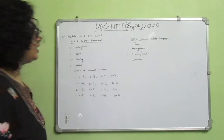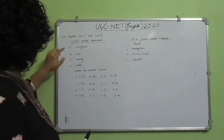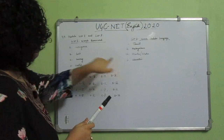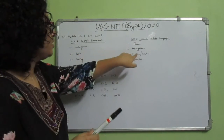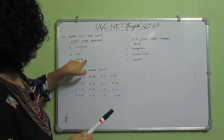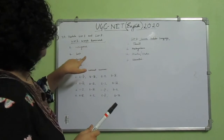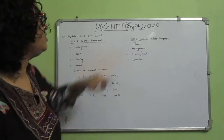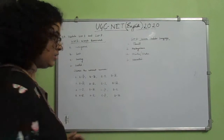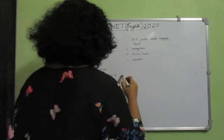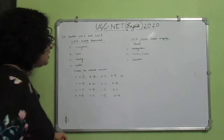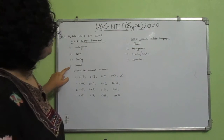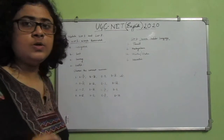The correct combination is: A — Mongoose was derived from Marathi, so A4. B — Loot was derived from Urdu, so B3. C — Curry was derived from Tamil, so C1. D — Betel was derived from Malayalam, so D2. The correct combination is option number 1: A4, B3, C1, D2.